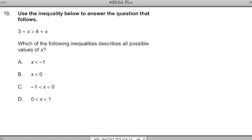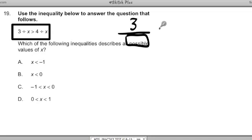Now we can get into actually reading over the problem. 3 divided by x is greater than 4 divided by x. Which of the following inequalities describes all the possible values of x? And then it has all these inequalities. First, let's break down what this is saying here. This is saying 3 divided by some value is going to be greater than 4 divided by some value. And I've got to determine what values of x are going to make this inequality make sense.